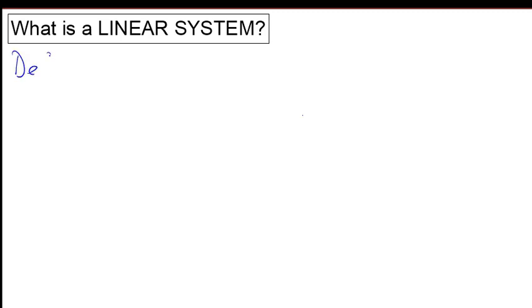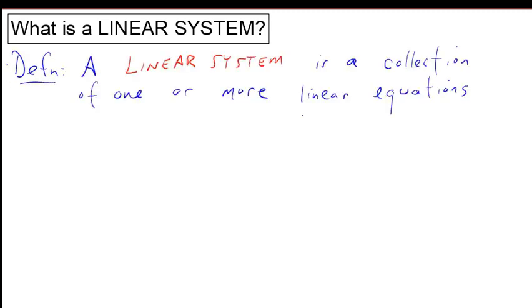What is a linear system? Here's the definition. A linear system is simply a collection of one or more linear equations.